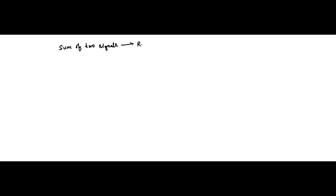In this video, we will discuss some basic concepts related to the sum of two signals and determining whether the resultant signal — that is, the sum of two signals — is periodic or non-periodic, and if it is periodic, what is the condition for which both signals will be periodic.